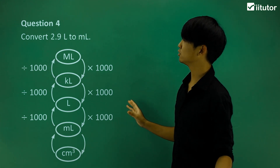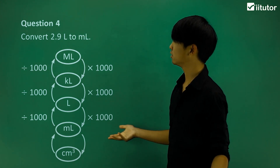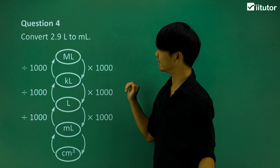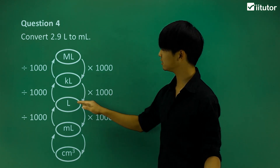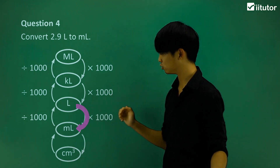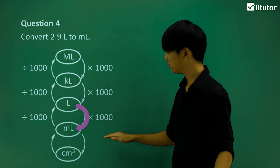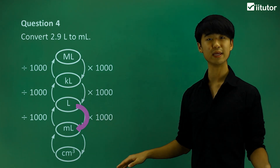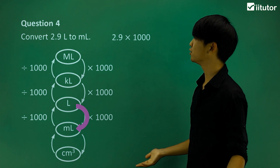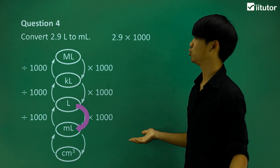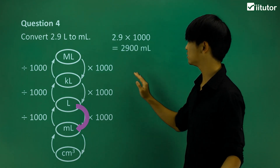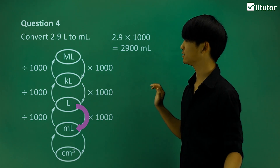Moving on to question number four: converting from 2.9 liters to milliliters, which is going from liters down to milliliters. We multiply 2.9 liters by 1,000, so 2.9 times 1,000 gives us 2,900 milliliters.